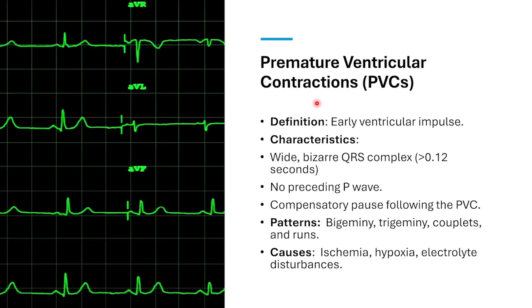The next thing is premature ventricular contractions, or PVCs. These are early ventricular impulses. They have characteristics such as a wide, bizarre QRS complex greater than 0.12 seconds. They don't usually have a P wave that precedes them, and there are compensatory pauses following the PVC. There are different patterns like bigeminy, trigeminy, couplets, and runs of PVCs.